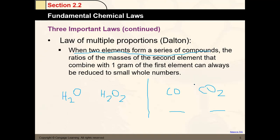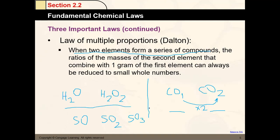The multiple proportion means that compounds are associated by factors of whole numbers — for example, times one, times two, times three. Another good example is sulfur: we can have sulfur monoxide (SO), sulfur dioxide (SO₂), and even sulfur trioxide (SO₃). All three compounds are made of sulfur and oxygen, but what makes the difference is the amount of oxygen present. So the multiple proportion is always associated with factors of whole numbers.